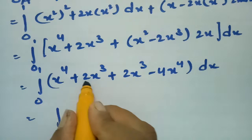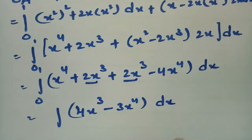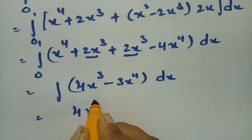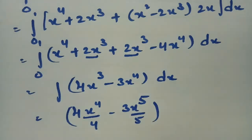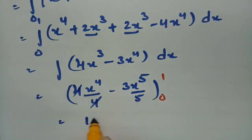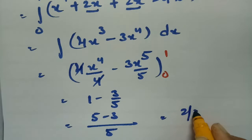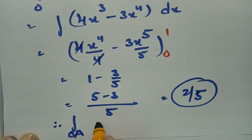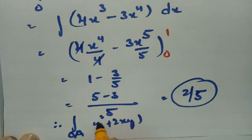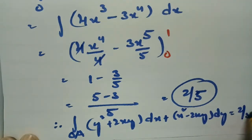Combining like terms gives the integrand as 4x³ − 3x⁴. Integrating from 0 to 1: [4x⁴/4 − 3x⁵/5] from 0 to 1 = 1 − 3/5 = (5 − 3)/5 = 2/5. Therefore, the integral along OA equals 2/5.